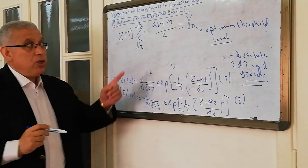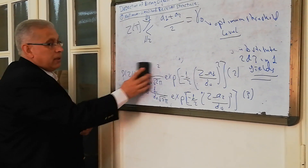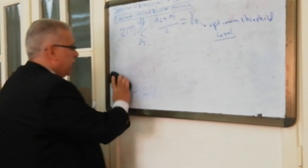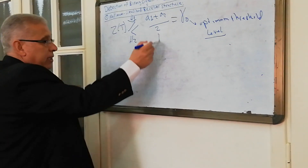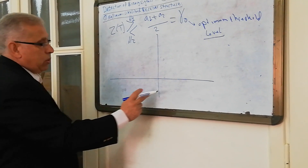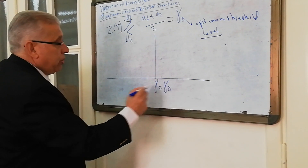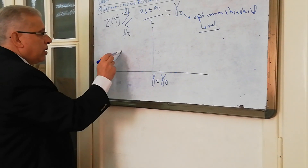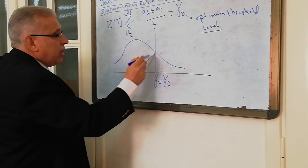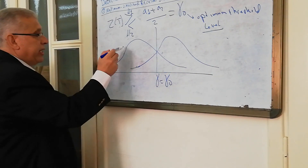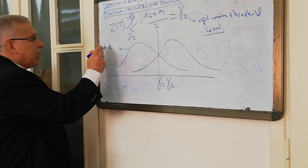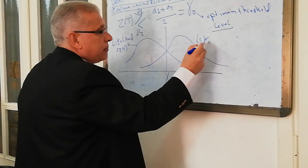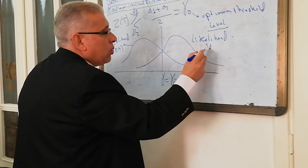Now we are going to obtain this optimum threshold level by minimizing the bit error probability. We are going to draw the two likelihood functions: the first conditional probability and the second conditional probability. This threshold is gamma equals gamma naught. I'm going to draw now the likelihood of S2 and the likelihood of S1 — the likelihood function p(Z|S2) of T and the likelihood function p(Z|S1) of T.